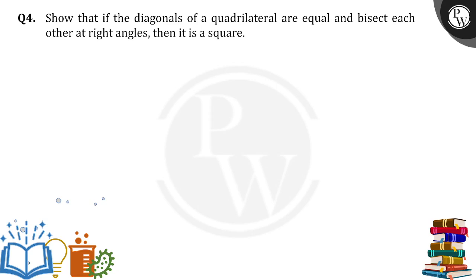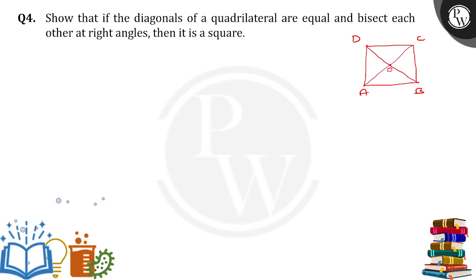So here there is a quadrilateral. I am drawing a quadrilateral figure here in which the diagonals are equal. Here A, B, C, D is a quadrilateral, where AC is one diagonal and BD is one diagonal — they both are intersecting at point O.